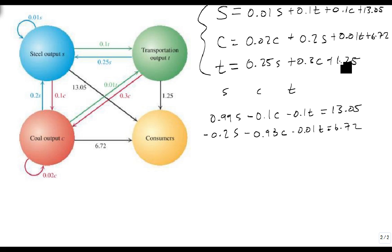And our last one is minus 0.25s minus 0.3c plus t equals 1.25. So we have successfully created a system of equations. Now, just to go back to the Leontief model for a moment,